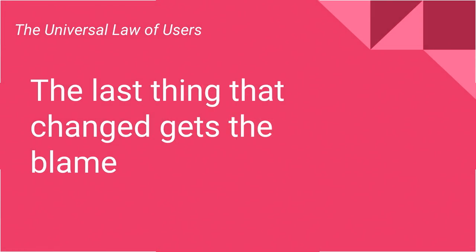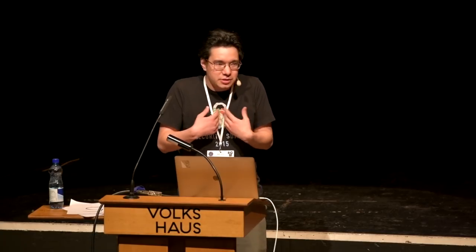If you remember no other slides from this talk, remember this one. The universal law of users is that the last thing that changed gets the blame. This is how every single user of any software works. If Chrome updates and suddenly everything is green, I blame Chrome and not my graphics driver, even though it might be the graphics driver's fault. And this means that when we go and break things — either when we remove things or deal with some buggy server — even though the server has 15-year-old cryptography or completely implemented the spec wrong, we're the ones who have to deal with the fallout, usually in the form of angry emails and angry users.